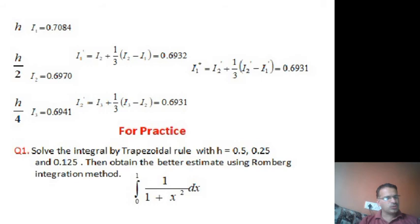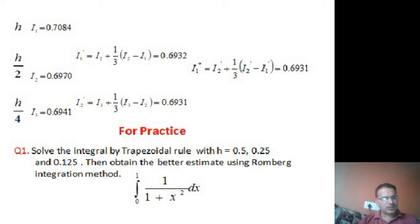Building the Romberg table with values at h, h/2, h/4: i1=0.7084, i2=0.6970, i3=0.6941. Computing i1' = i2 + (1/3)*(i2 - i1) = 0.6970 + (1/3)*(0.6970 - 0.7084) = 0.6932. Computing i2' = i3 + (1/3)*(i3 - i2) = 0.6941 + (1/3)*(0.6941 - 0.6970) = 0.6931. Then i1** = i2' + (1/3)*(i2' - i1') = 0.6931 + (1/3)*(0.6931 - 0.6932) = 0.6931.